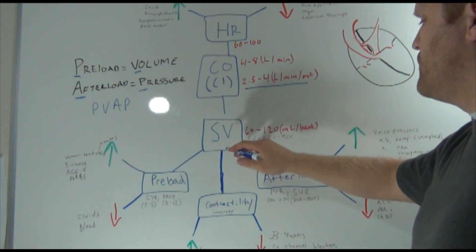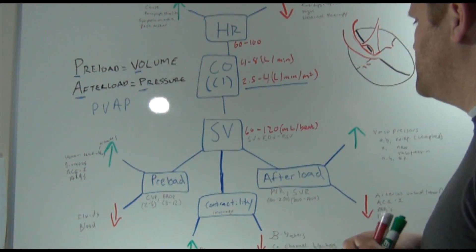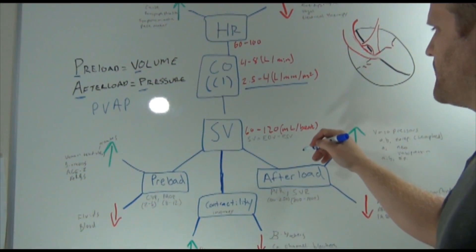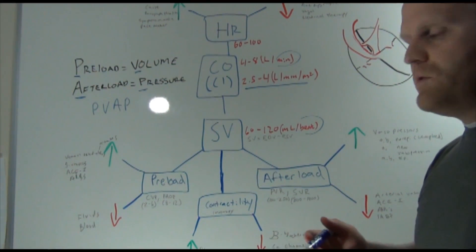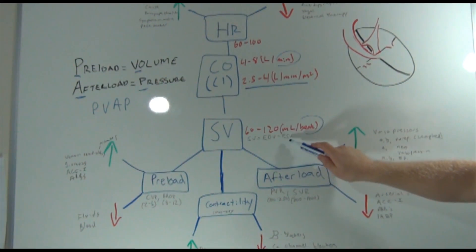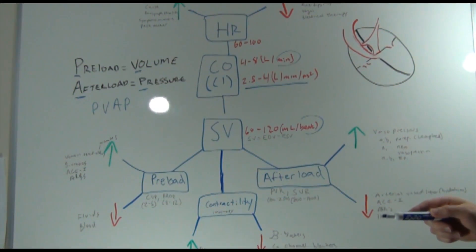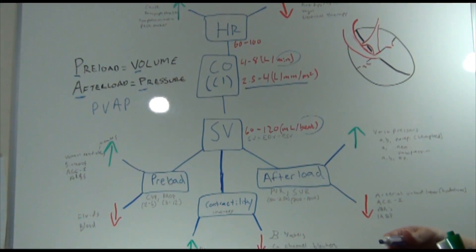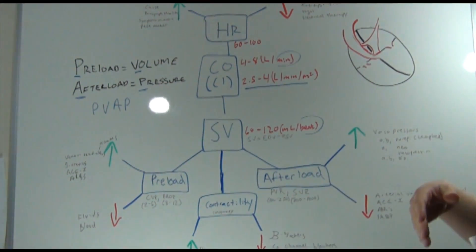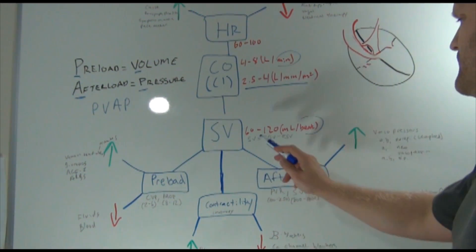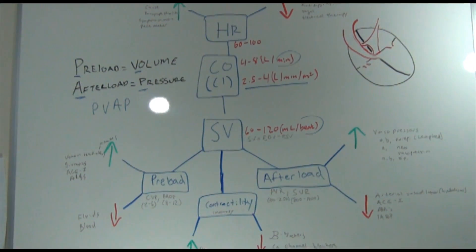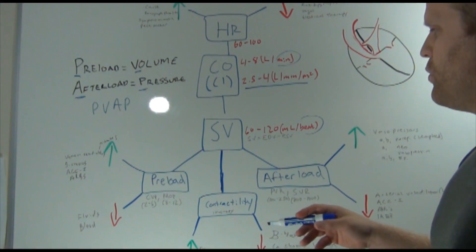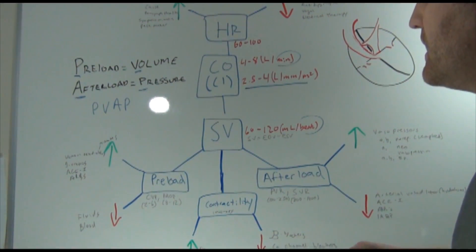Cardiac output is affected by stroke volume. Stroke volume is the volume of blood per beat — cardiac output is per minute, stroke volume is per beat. We calculate stroke volume as end diastolic volume minus end systolic volume: what's in the ventricles at the end of filling minus what remains after contraction. Normal stroke volume is 60 to 120 milliliters per beat.